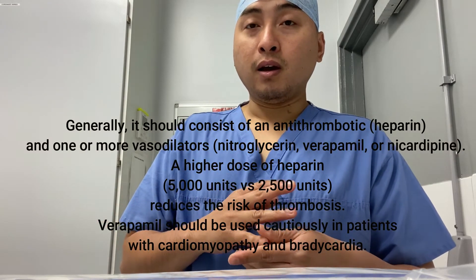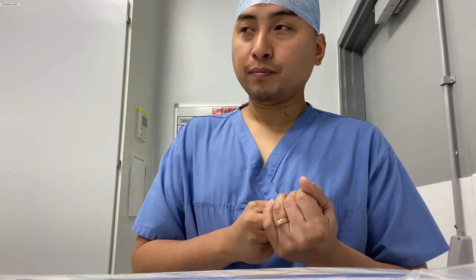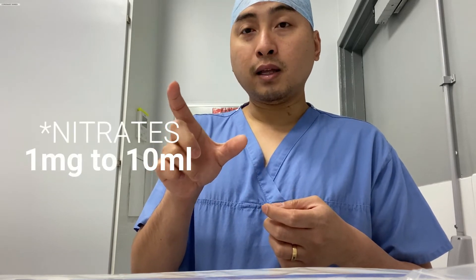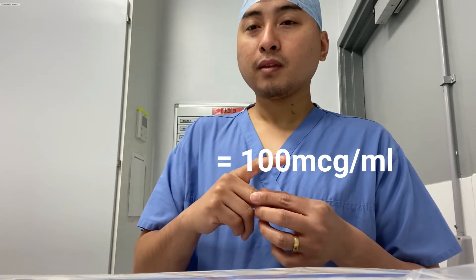The heparin dose should always be based on the patient's weight — I believe it's 50 international units per kilogram. So if a patient is 90 kilos, that's 50 times 90 units. We also prepare nitrates: 1 milligram of nitrates mixed with hepsaline to make 10 mls, giving a concentration of 100 micrograms per ml. Those are the basic medications we need for the procedure.